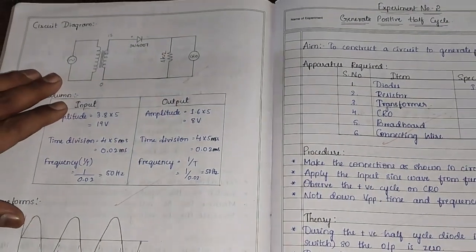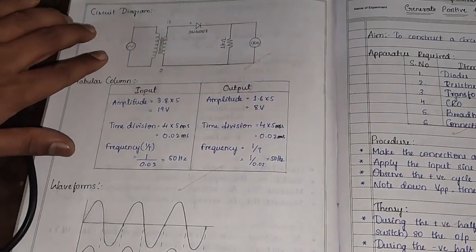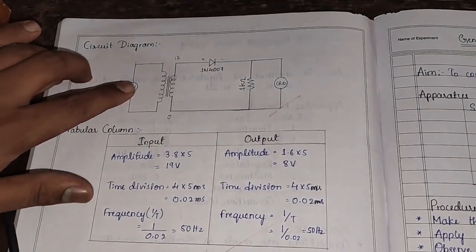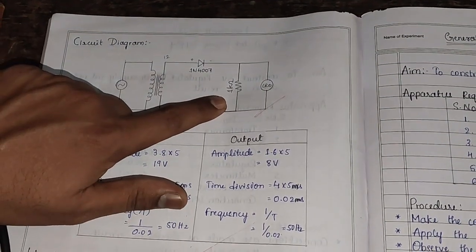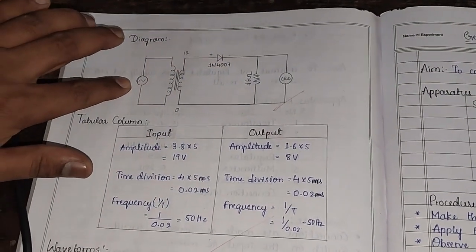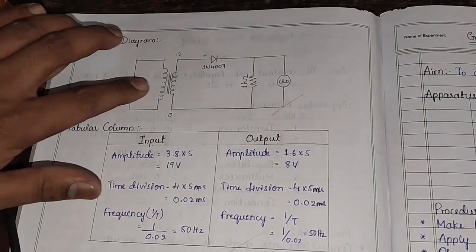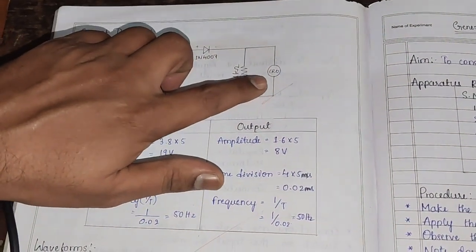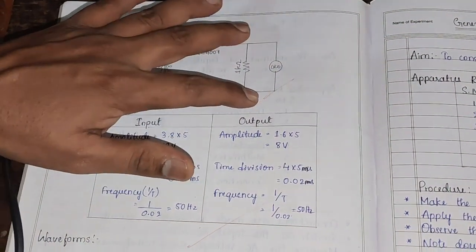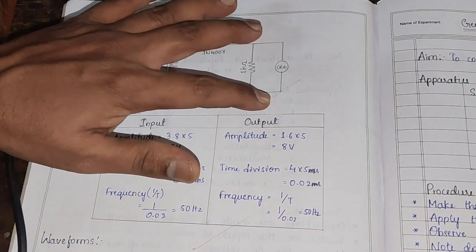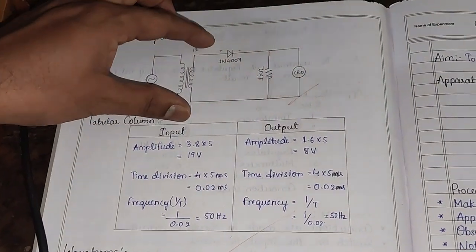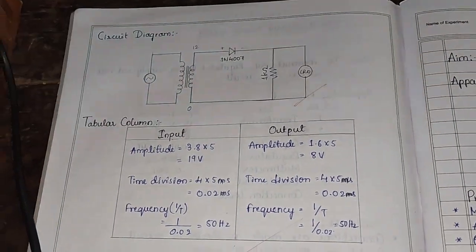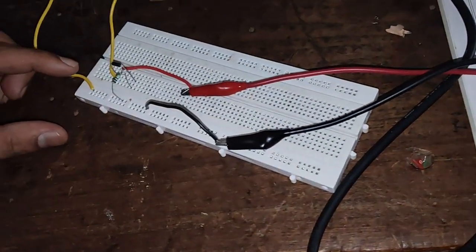This positive half cycle generator consists of one transformer, one diode, and one resistor. We have to give AC input, and the rectified output or positive cycle is obtained at the output resistor R. Here we apply the AC input based on this circuit diagram. We have constructed a circuit from this.